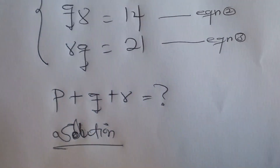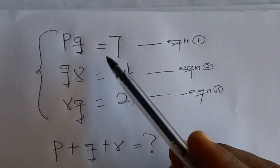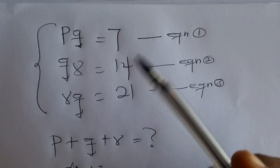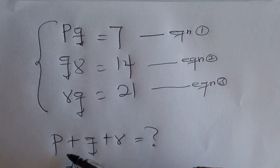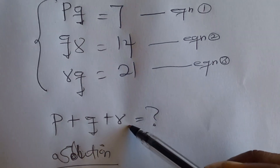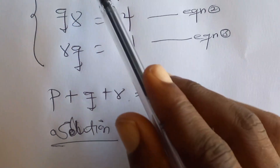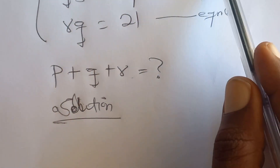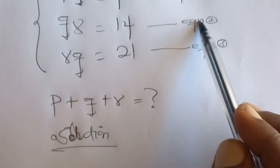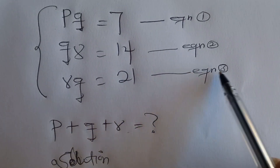Now let's come to our major question. We are having this system of equations, and we are to find P plus Q plus R. We name this as equation 1, equation 2, and equation 3.